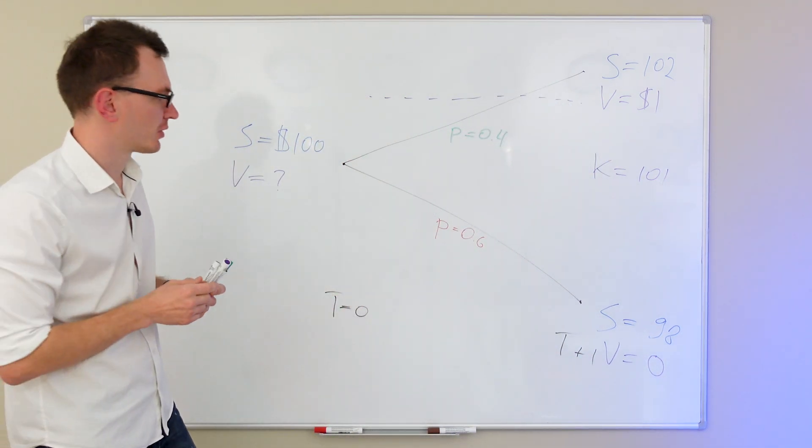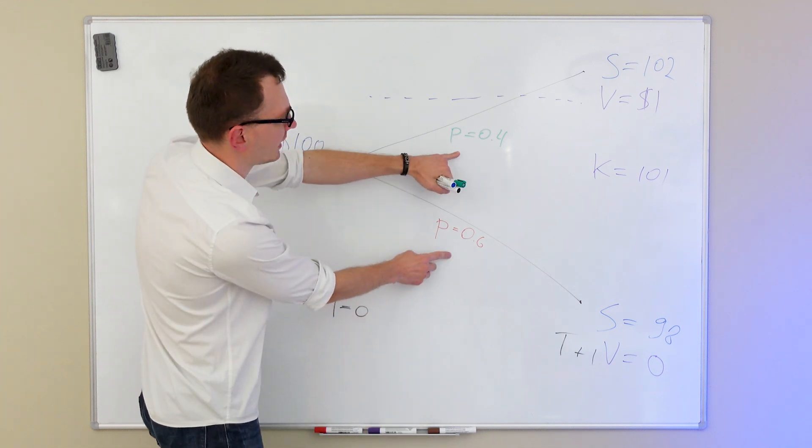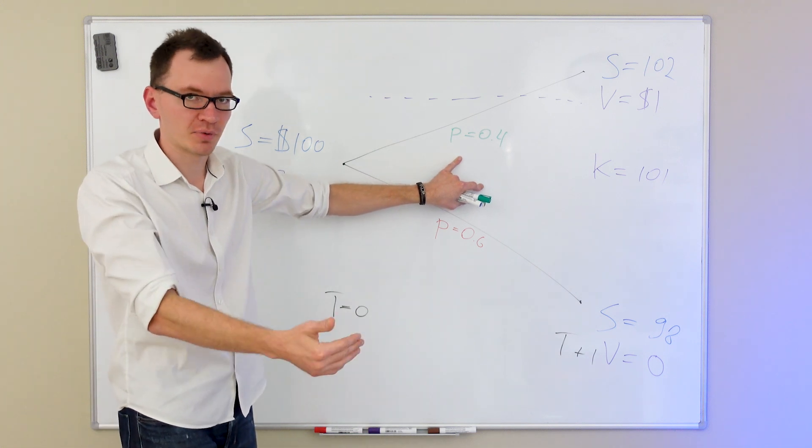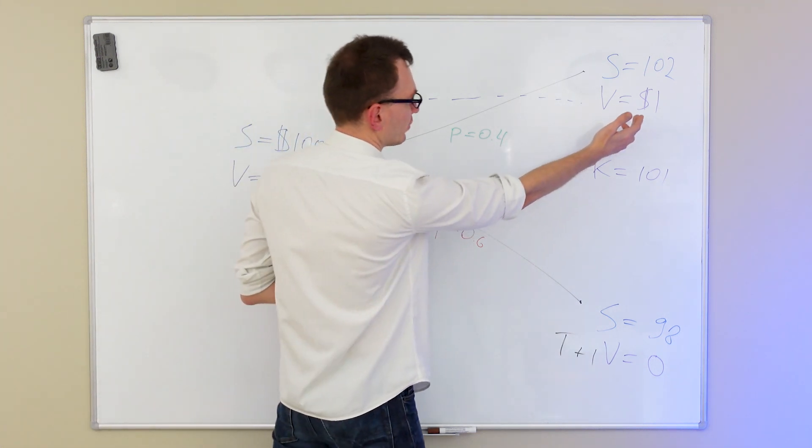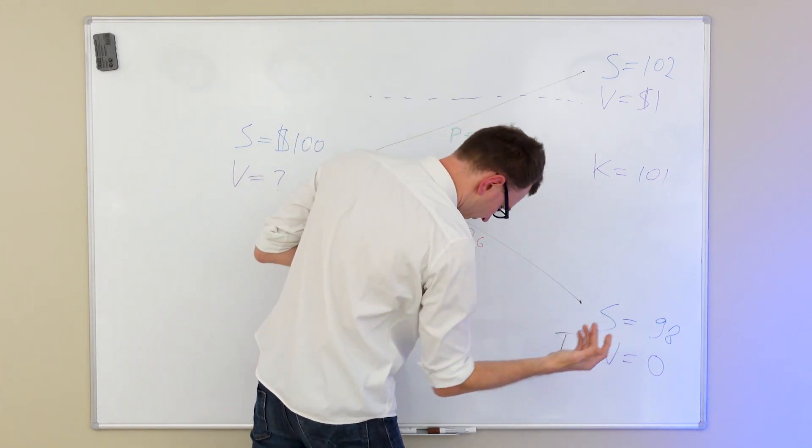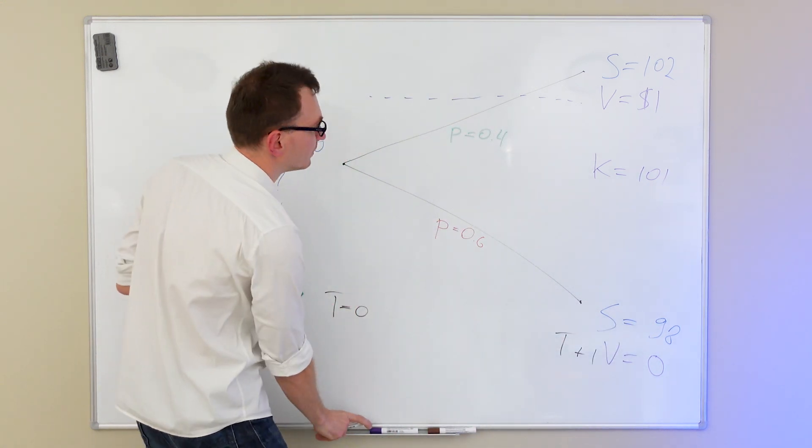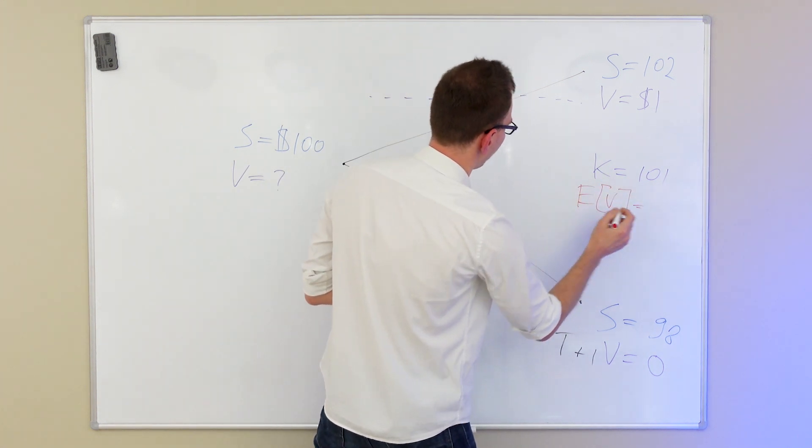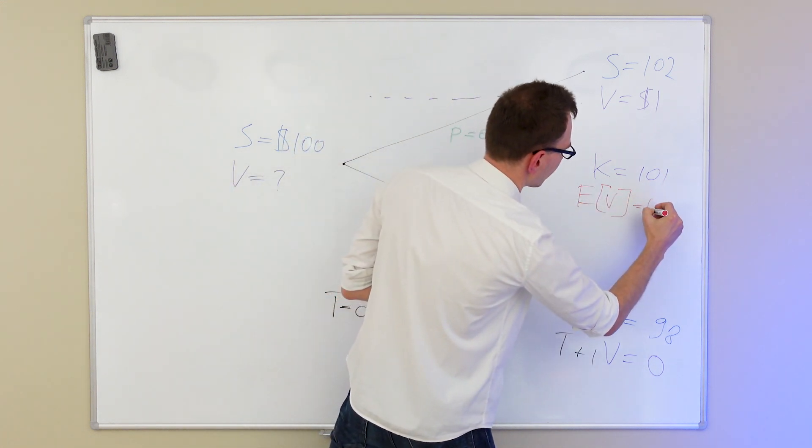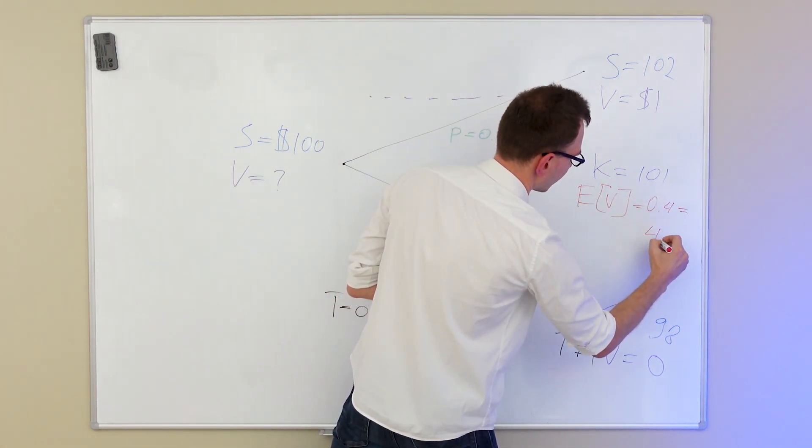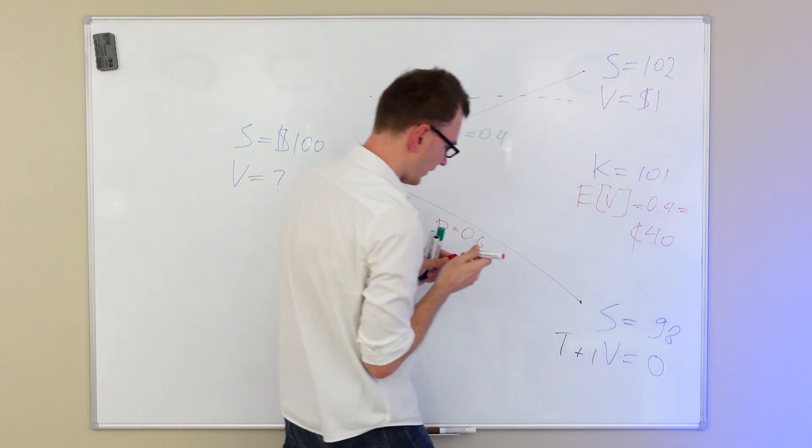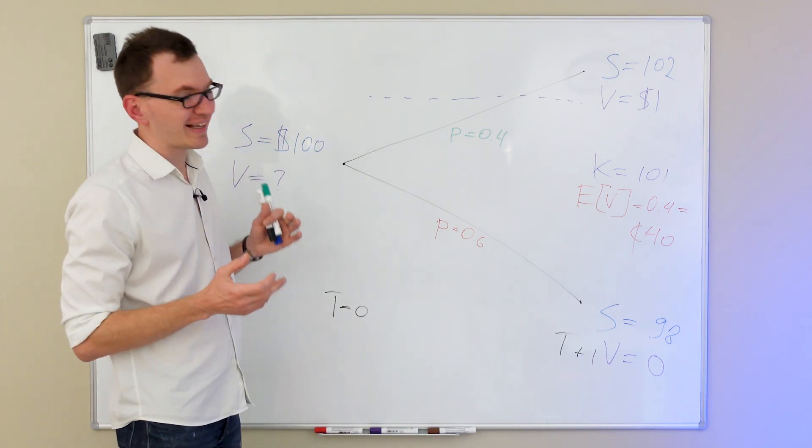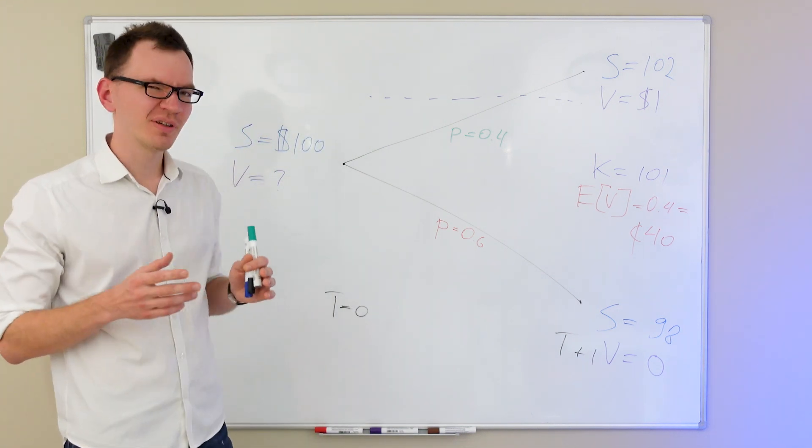So, what can we do with that information? Well, since we know the probabilities of an up state and a down state, we can find an expected value of an option. And that is quite simply 0.4 times 1 plus 0.6 times 0. And if we do that, we find that the expected value of an option is going to be 0.4 or 40 cents. Now, that price represents the expected value of an option. Is that the correct price? Unfortunately, it's not.